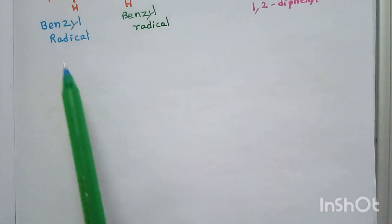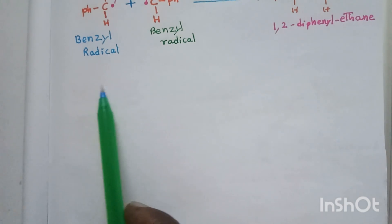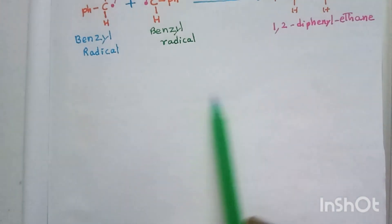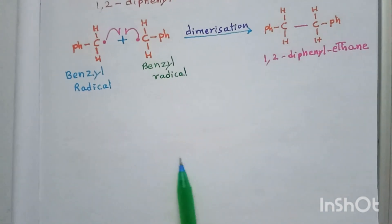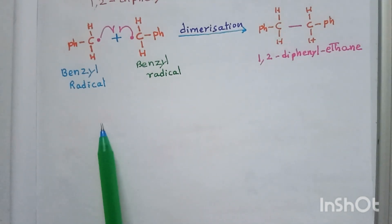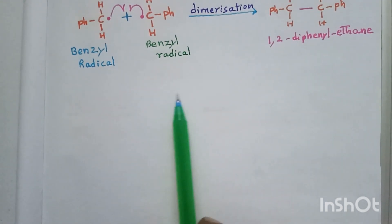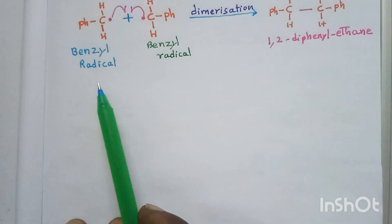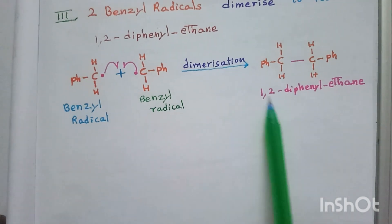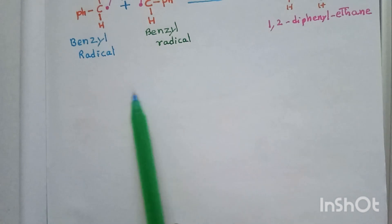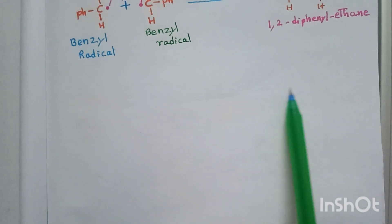We have now completed Part 2 of photoreduction of carbonyl compounds. First we learnt about the introduction; in Part 2 we learnt about photoreduction in isopropyl alcohol; and here we learnt about photoreduction of benzophenone in toluene. In the coming lecture we shall learn about photoreduction of benzophenone in benzhydrol.